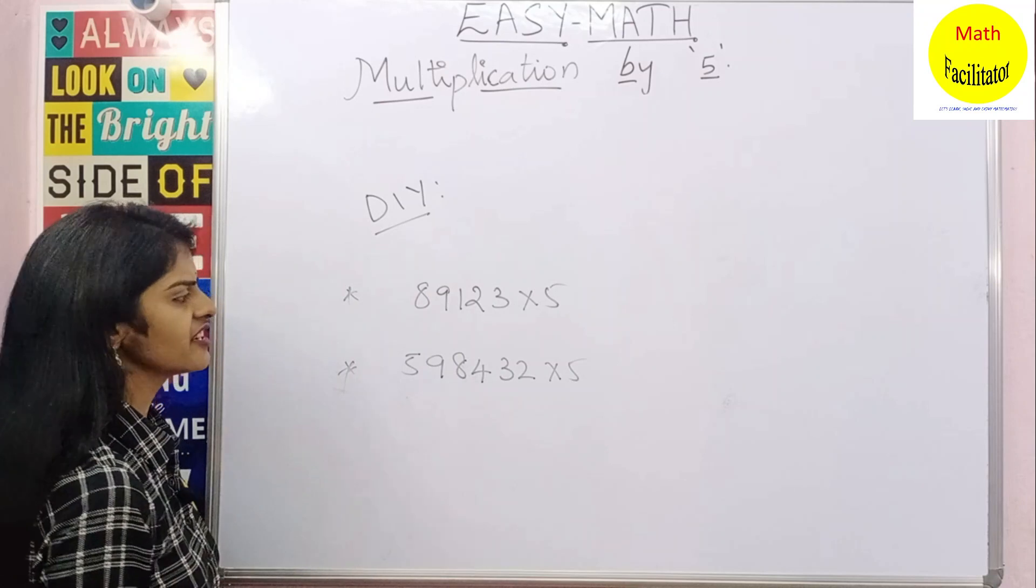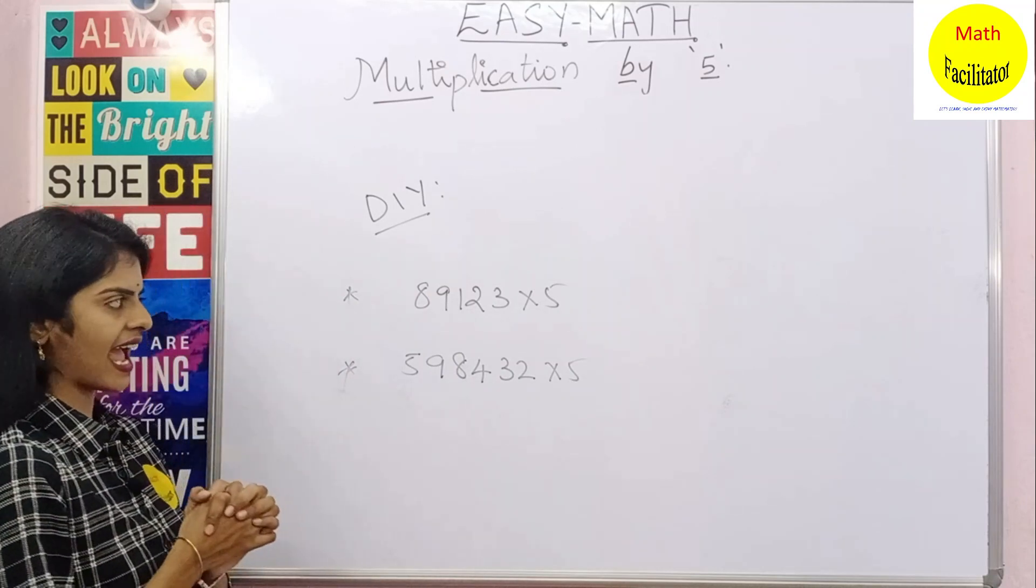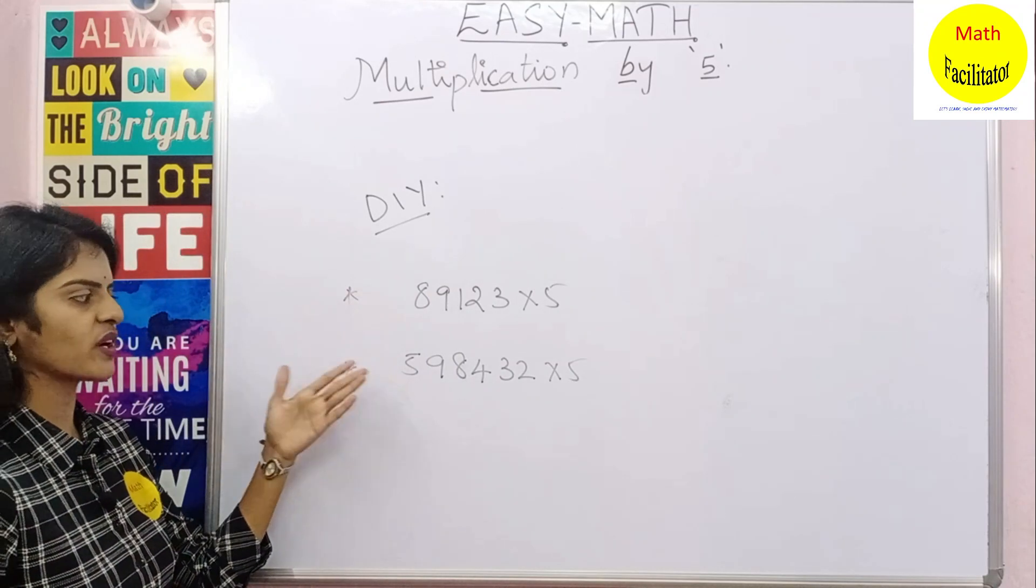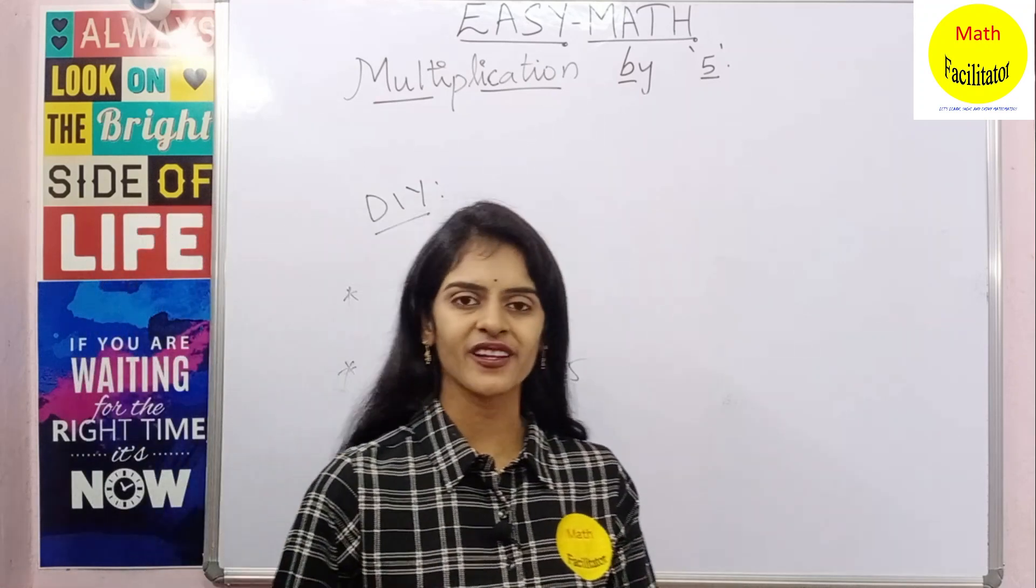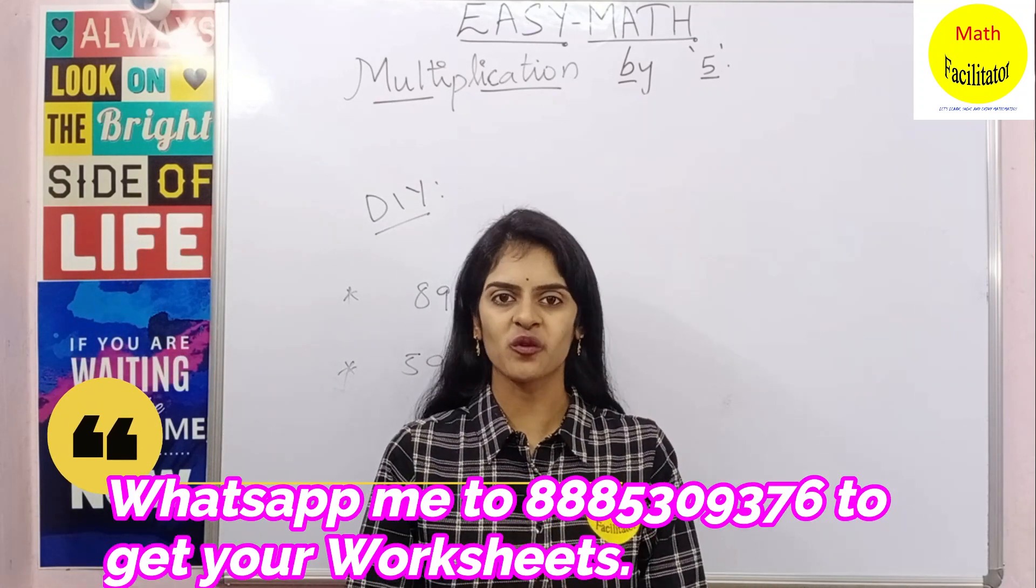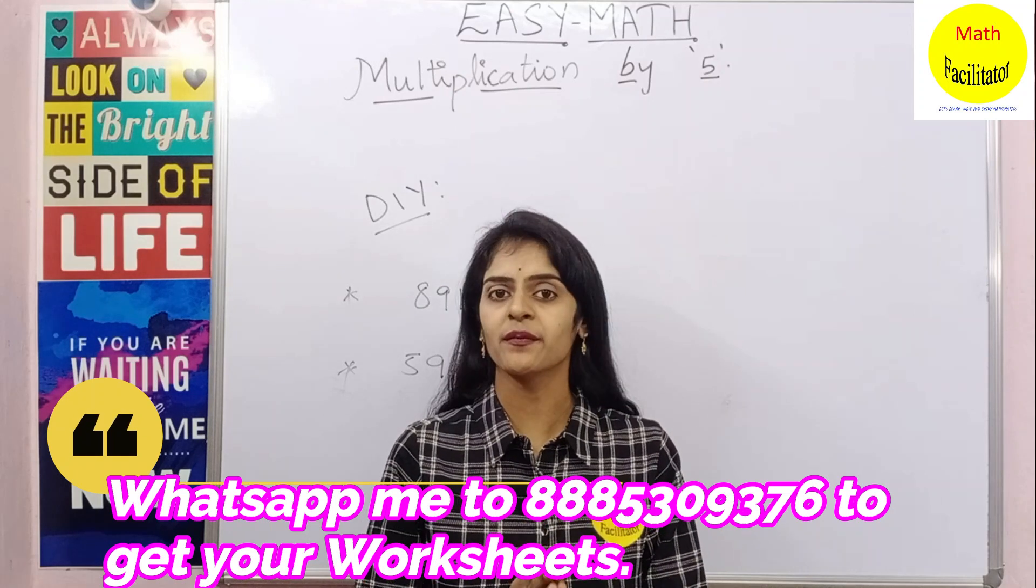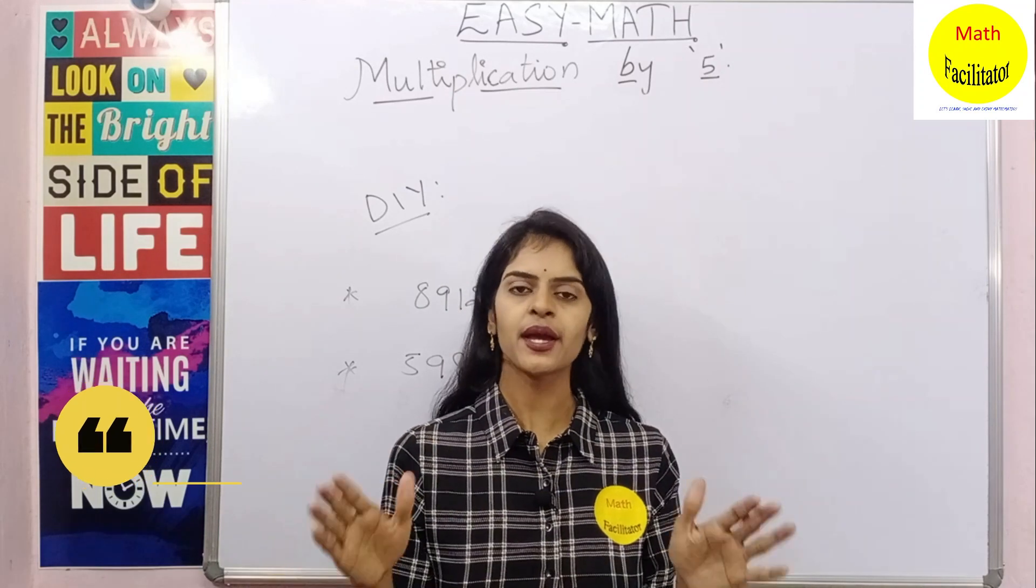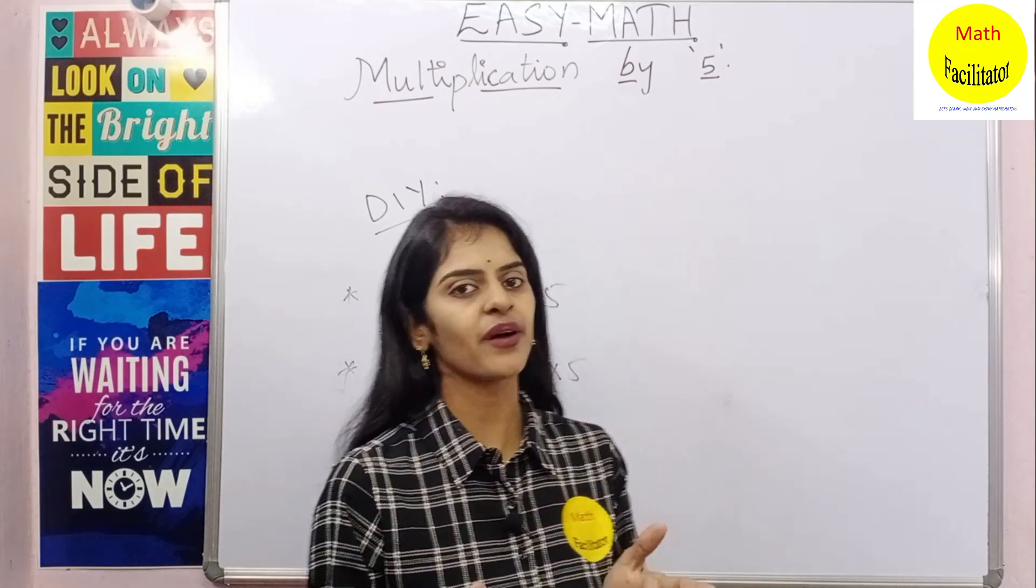Now it's your time to do it yourself. So multiply these two numbers. I have given one odd number and one even number. So try it yourself, and before that you have to text me to get your worksheets. The WhatsApp number I am providing in the description box below. So text me, practice the worksheet, and then come back to the video and solve the Do It Yourself.